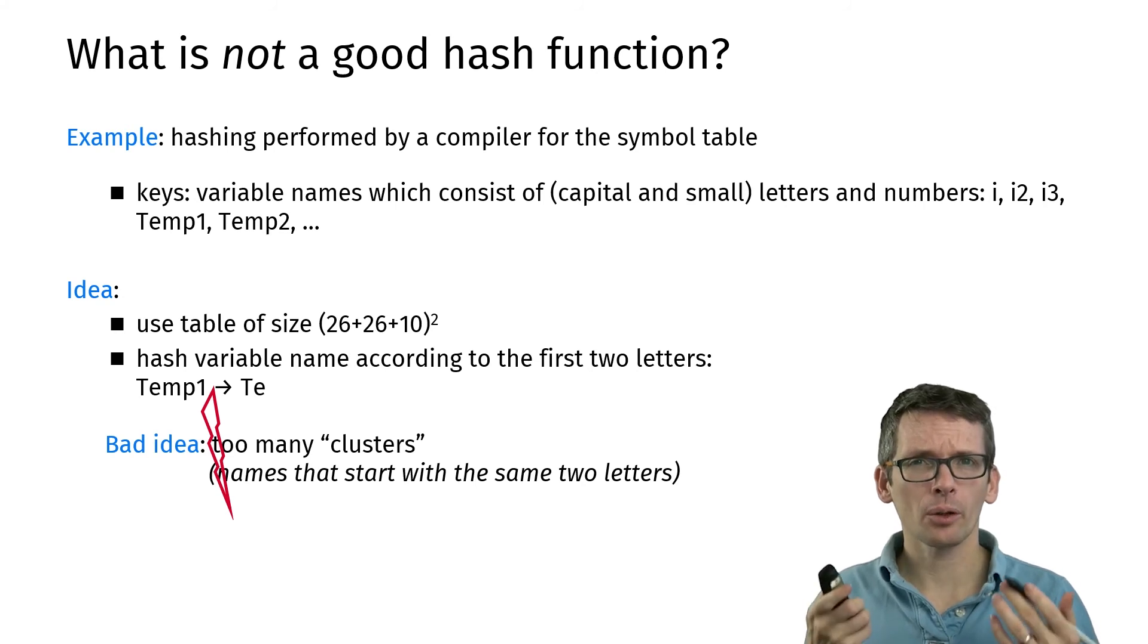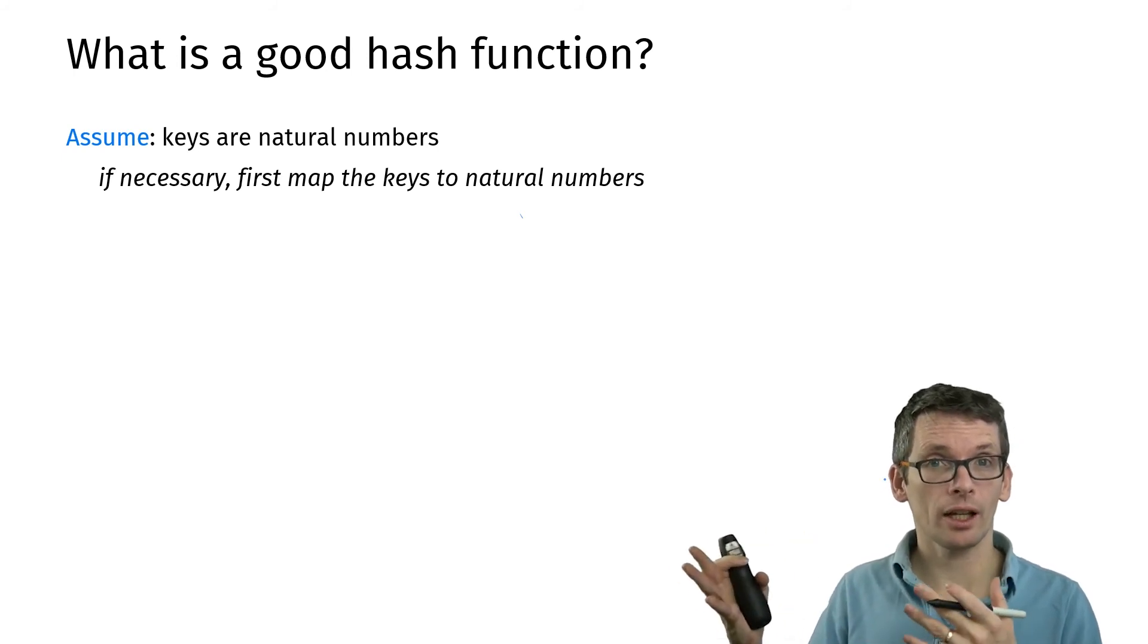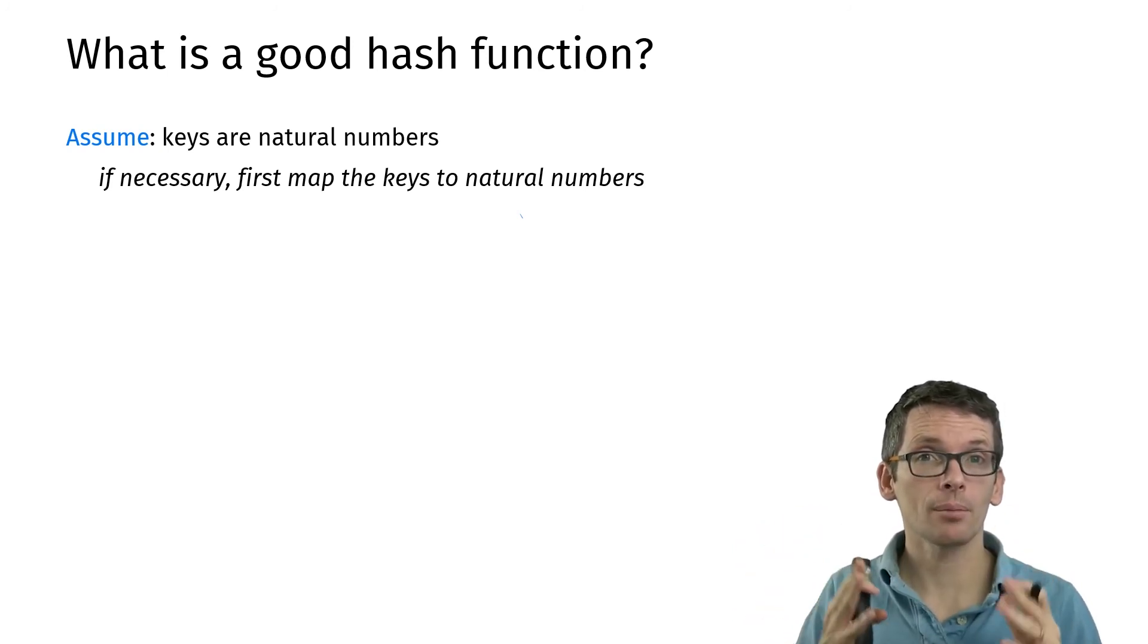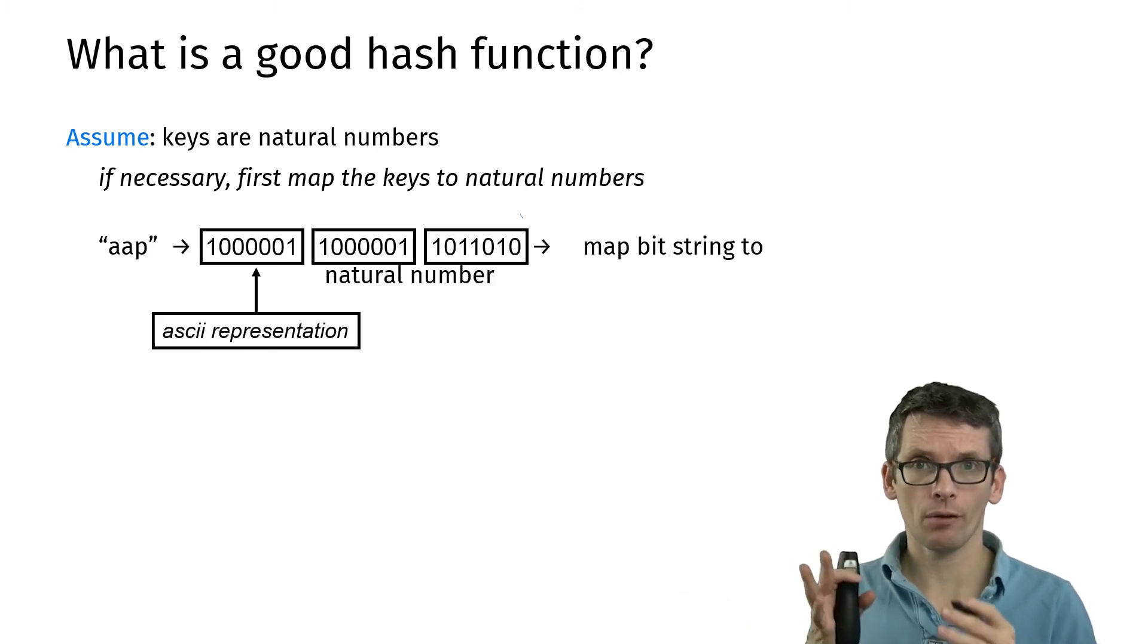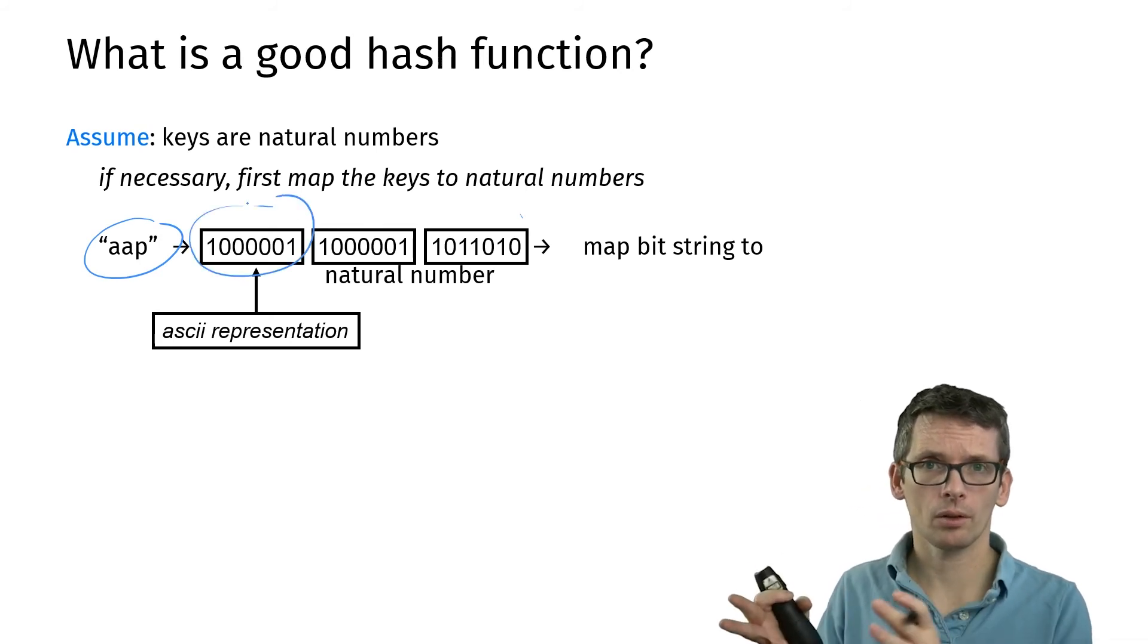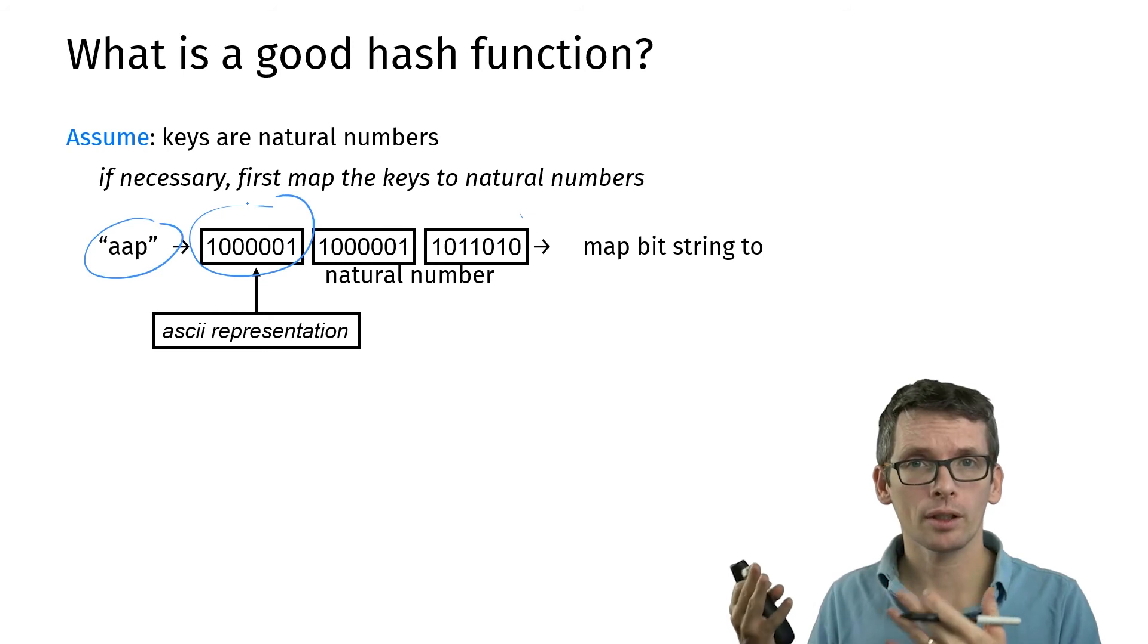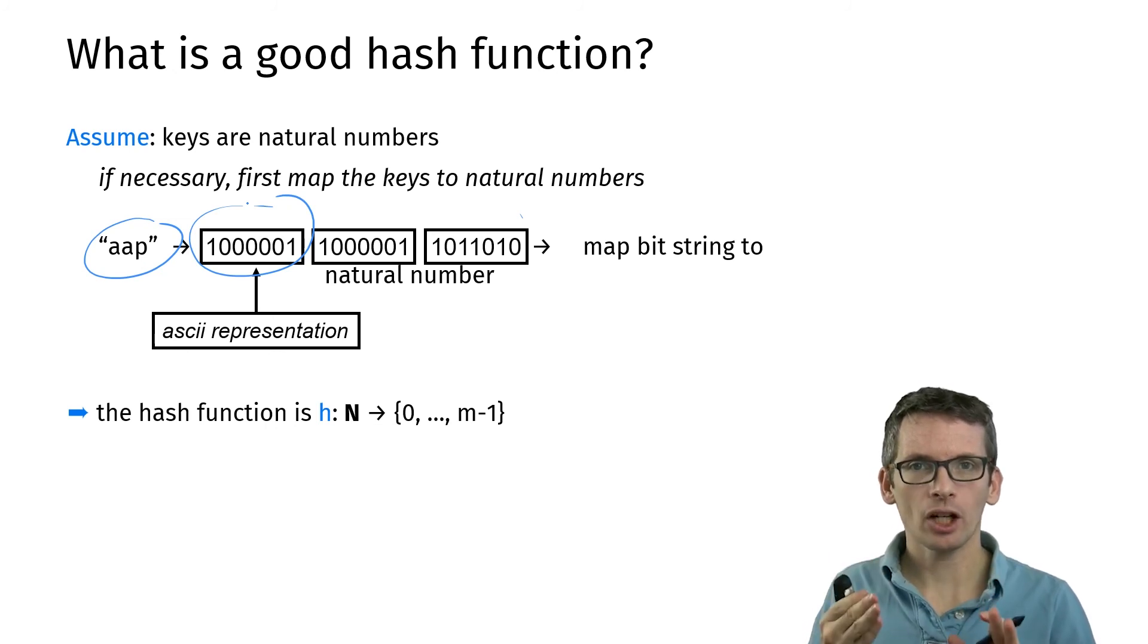So what is a good hash function? We will want to address this question for the setting where the keys are integers, where the keys are natural numbers. In the example we just saw, we actually had as keys combinations of letters and numbers. So let's first think about how to make sure that we always have numbers as keys. That's actually easy to achieve. If we have a string as a key, we simply map it to a number. Here's an example of how such a mapping might look like. The word here, AAP—the Dutch word for monkey—has three letters. Each letter has a so-called ASCII representation, a representation as a number. I can simply string up those numbers, and that gives me a number for the string that I can use then for hashing.